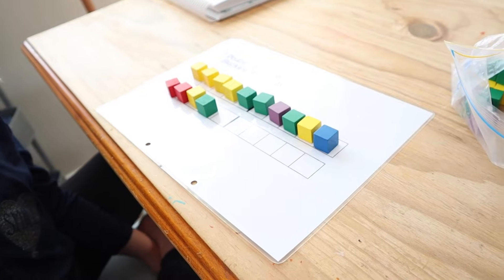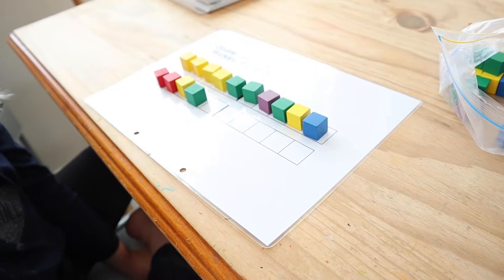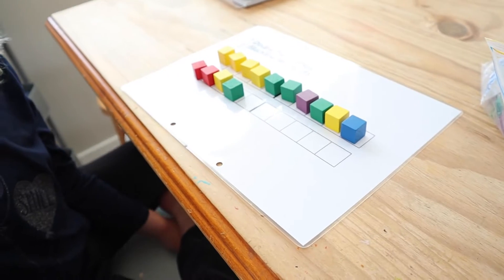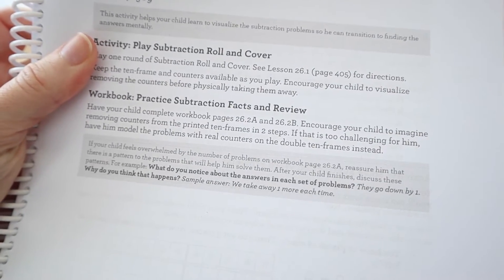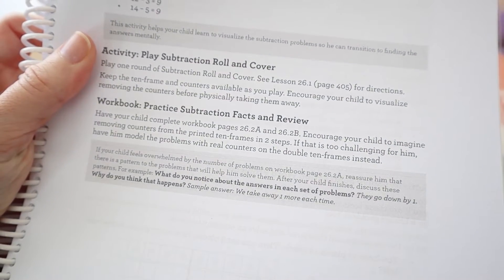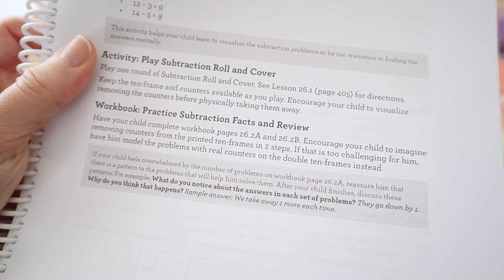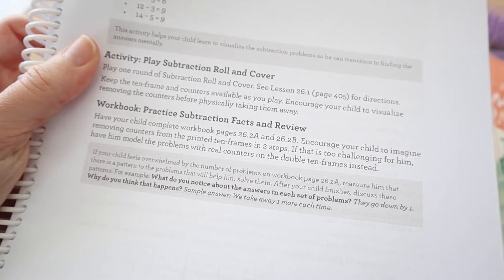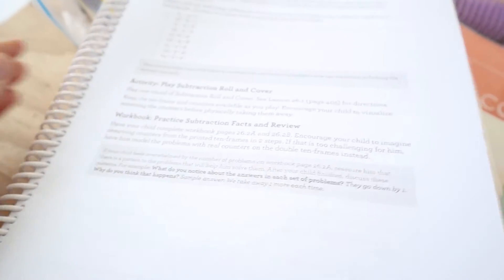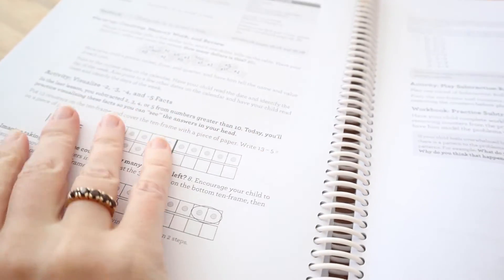Okay. So now we're going to play subtraction roll and cover. Okay. I need to go find the directions for that. It does say that here. There are lots of games in here. Hang on. Let me see this. Focus. Subtraction roll and cover. See lesson 26.1, which is what we actually did yesterday for directions. Keep the 10 frame and counters available as you play. Encourage your child to visualize removing the counters before physically taking them away. Okay. So this is all about mental math today. And what we're going to do is go back to yesterday's lesson in your workbook. All right. So that's the lesson taught.